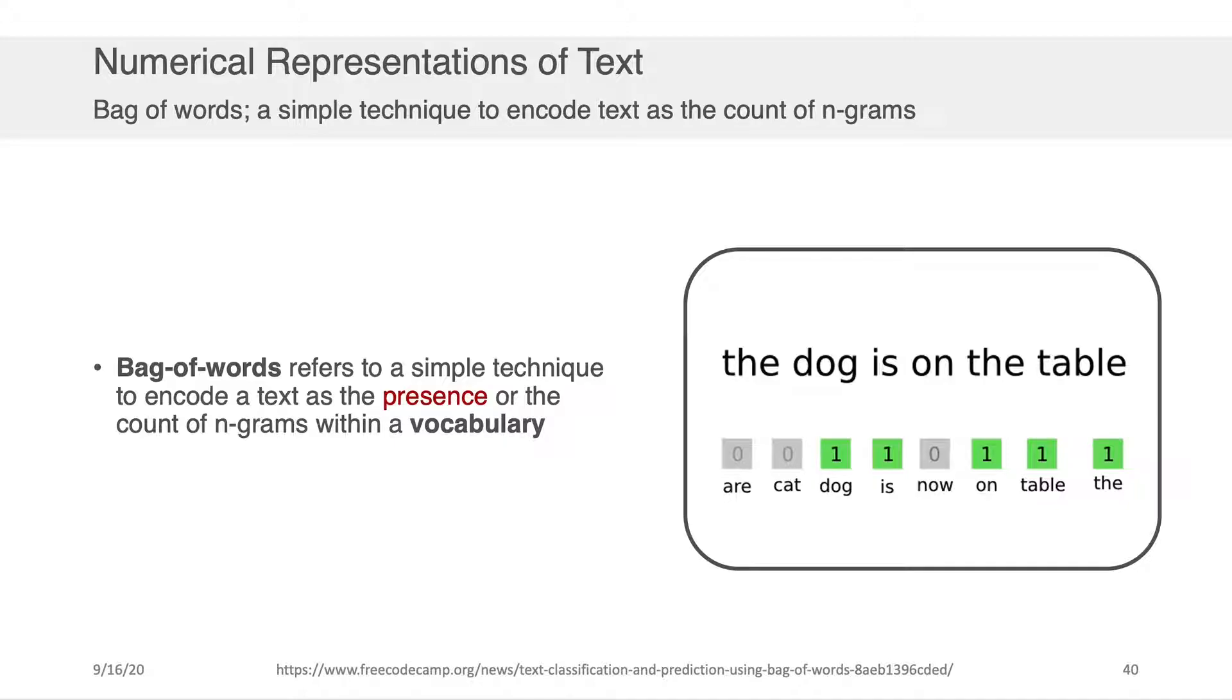So, for example, let's say we had the sentence there on the right, the dog is on the table. The bag of words representation for that within the vocabulary space, which note also includes the words are, cat, and now, even though they don't show up in the sentence. The representation of that particular sentence is one for dog, one for the word is, one for the word on, one for the word table, and one for the word the.